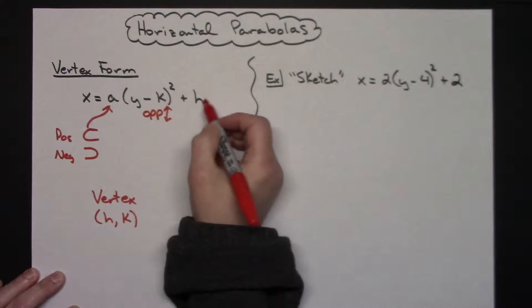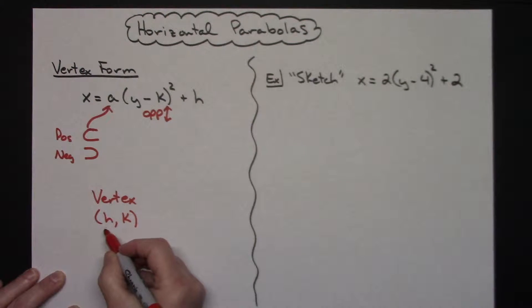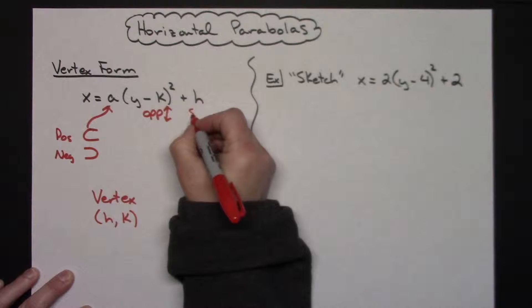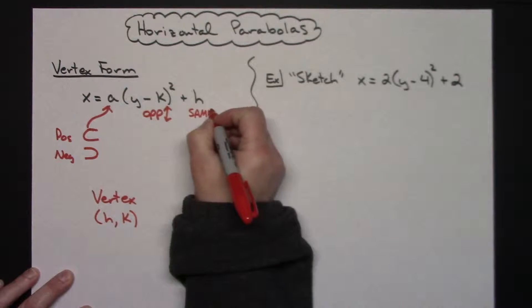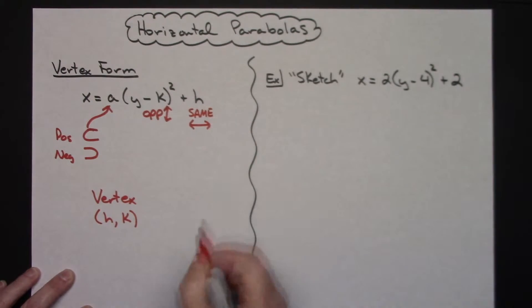The value out here this time is my h value. It is still in my vertex, it's still my x coordinate. So then I'm going to move left or right for my x coordinate, so it's going to tell me how to move the same left or right, and this is completely opposite than if you were doing a vertical parabola.